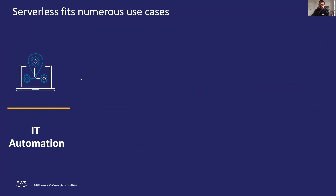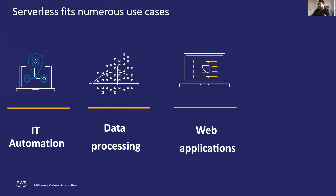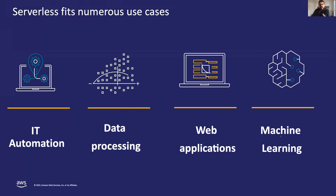We see customers building a wide variety of applications with serverless building blocks, but there are a few common areas where they get a huge benefit. They often start with IT automation — such as using a Lambda function to validate configuration changes each time an EC2 instance is launched. Individual teams might then use Lambda integration with S3 or Kinesis streams to build data processing applications. As teams mature, multiple teams start building whole microservice-based applications, and finally they often use Lambda in machine learning applications.